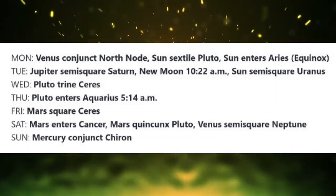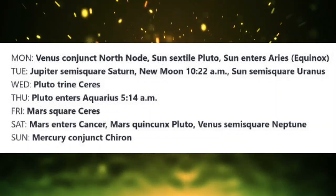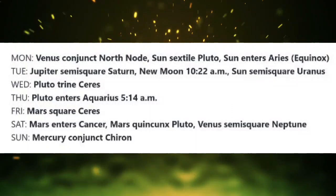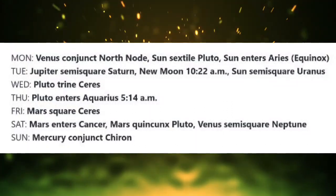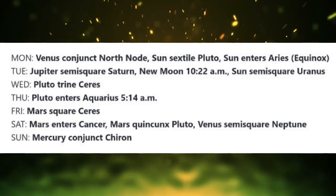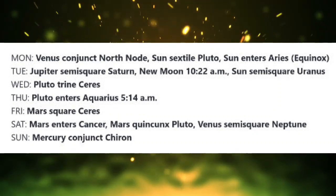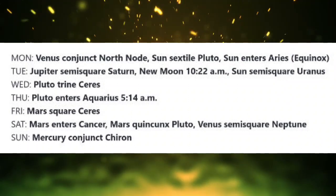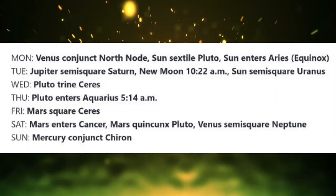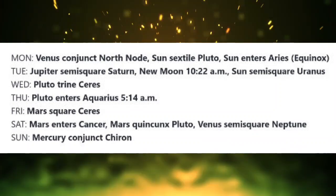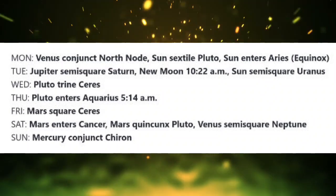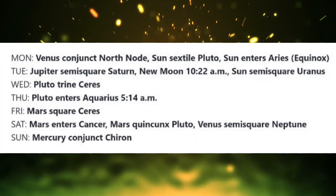On Tuesday, Jupiter is semi-square Saturn. Unsettling situations result as we grapple with a conflict between our need for stability and a desire for expansion. The new moon occurs at 10:22 AM Pacific Daylight Time. The Sun and Moon align at the Aries point for this new moon, which may correspond with events that affect large numbers of people. And on Tuesday, the Sun is semi-square Uranus. Misunderstandings and reactionary tendencies cause upheaval.